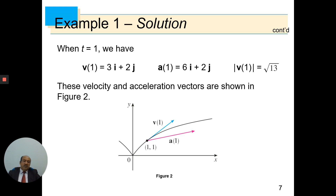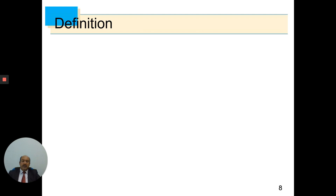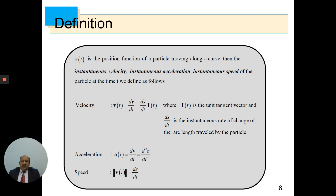The velocity and acceleration vectors are shown in figure 2. We construct the graph of the vector function first, then at point (1,1) we draw the vectors v(1) and a(1) based on their coordinates. Now let's define the instantaneous velocity, instantaneous acceleration, instantaneous speed of the particle at time t, and direction, which are defined by the following formulas. Here T(t) is the unit tangent vector and ds/dt is the instantaneous rate of change of the arc length traveled by the particle.